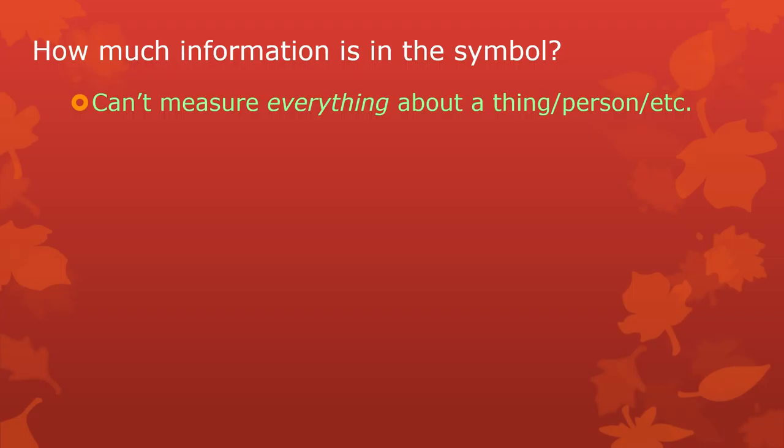You can't measure everything about whatever it is you're observing. Say you're observing people — you can't watch everything about them simultaneously: how they walk, how tall they are, the color of their clothes, their apparent ethnicity, their sex, how quickly they got from here to there, their smell, the color of their eyes, the color of their hair. You can't. It's just ridiculous. There are an infinite number of things to pay attention to.